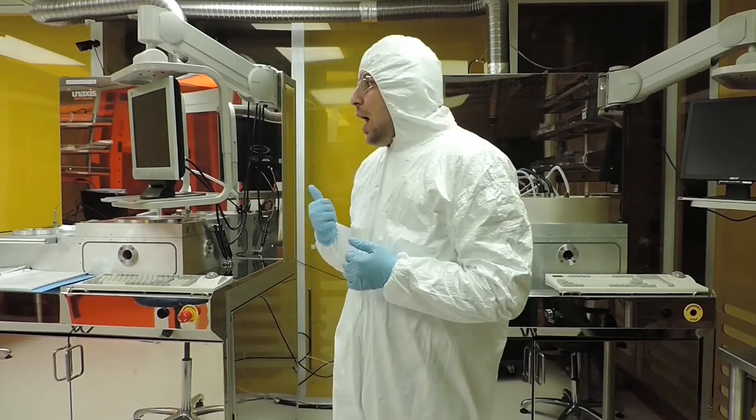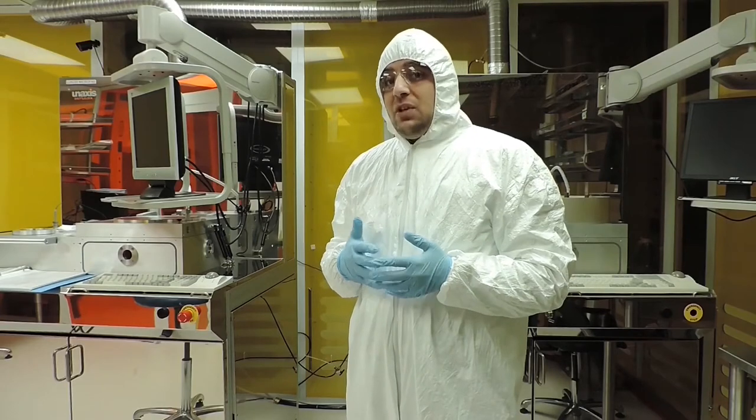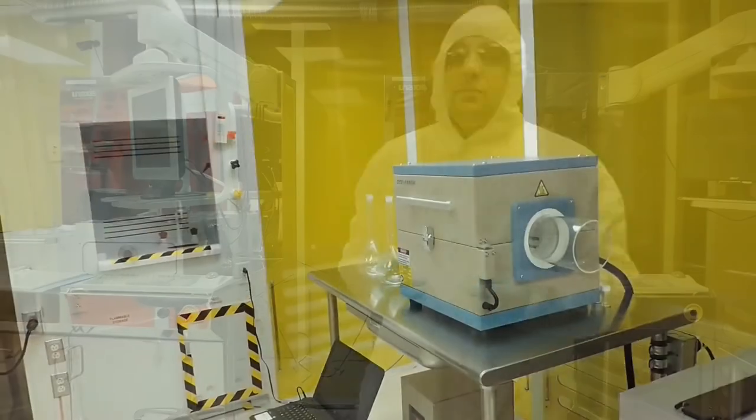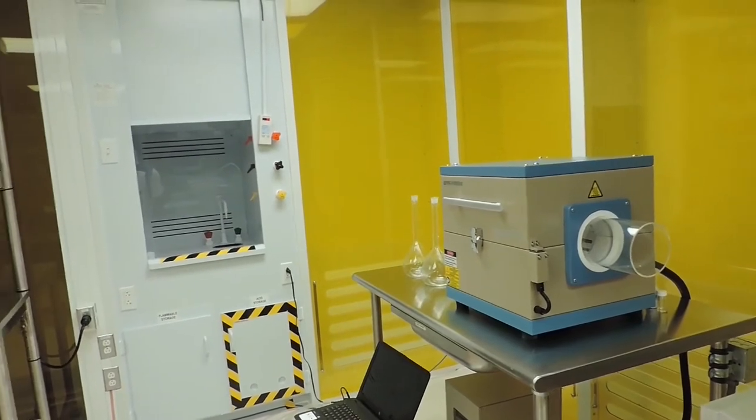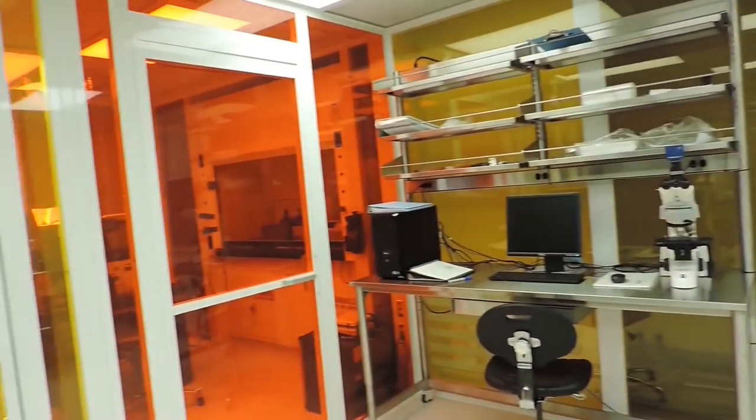Right next to it we have a reactive ion etching system. Such a system is designed to etch silicon-containing compounds and can process up to eight-inch wafers. We also have some tube furnaces that are used for thermal annealing, and on the other side of the clean room we have our photolithography system.